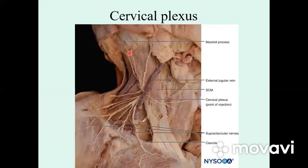They join together and make the cervical loop. The cervical loop gives motor fibers to the infrahyoid muscles of the neck. The sensory cutaneous branches are the lesser occipital nerve, greater auricular nerve, transverse cervical nerve, and supraclavicular nerve.